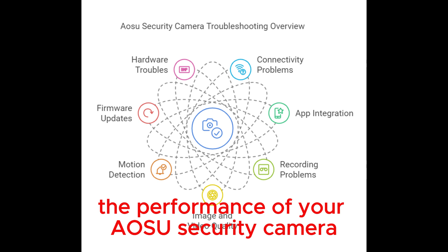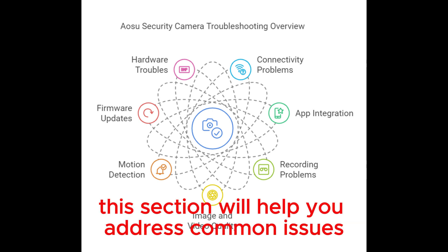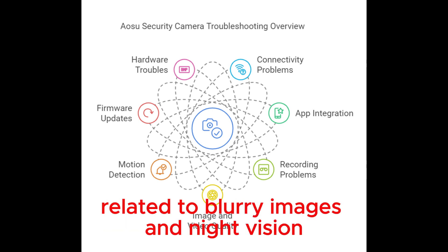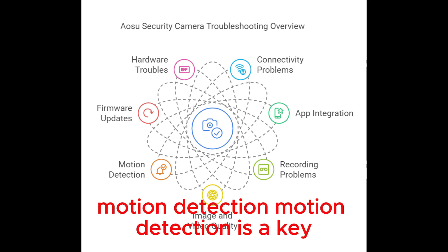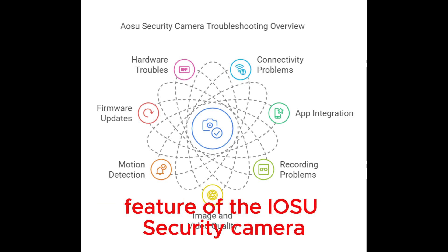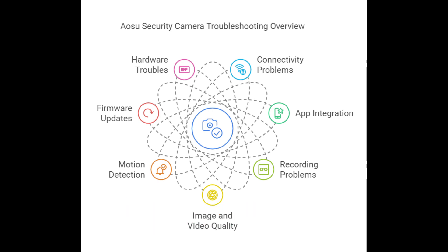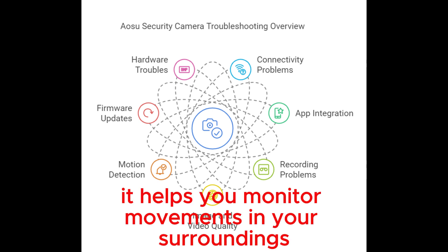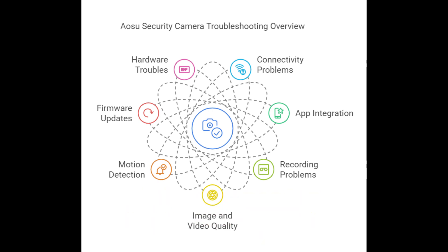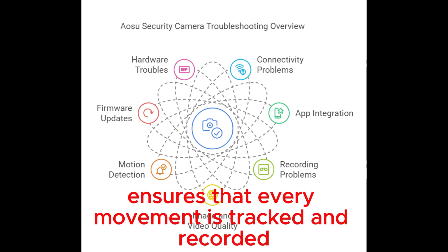Image and Video Quality: Ensuring high-quality images and videos is essential for effective security monitoring. Troubles with image and video quality can hinder the performance of your IOSU security camera. This section will help you address common issues related to blurry images and night vision.